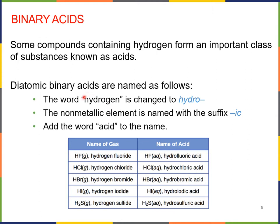When we have a diatomic binary acid, the word hydrogen is changed to hydro. The nonmetallic element is given the suffix -ic instead of -ide, and the word acid is added to the name. So if we look at HF as a regular compound — using the rules for naming ionic compounds — it would be hydrogen fluoride. But when we look at it in its aqueous form as an acid, it becomes hydrofluoric acid. HCl is very common — many of you have probably used it in the laboratory. As a gas, we would call it hydrogen chloride. But once it's dissolved in water and becomes acidic, we call it hydrochloric acid.